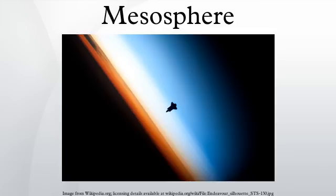In the mesosphere, gravity wave amplitudes can become so large that the waves become unstable and dissipate. This dissipation deposits momentum into the mesosphere and largely drives global circulation. Noctilucent clouds are also located in the mesosphere.